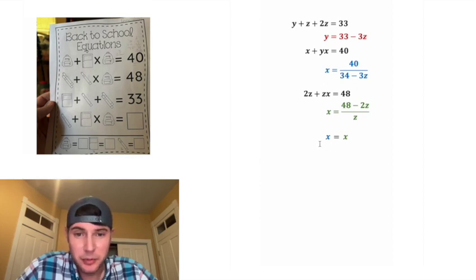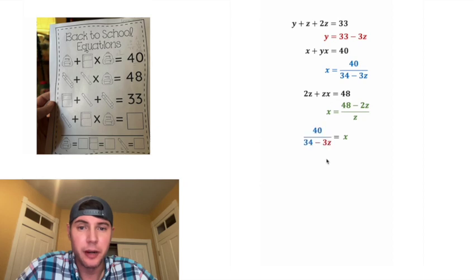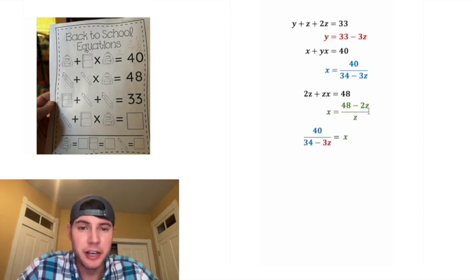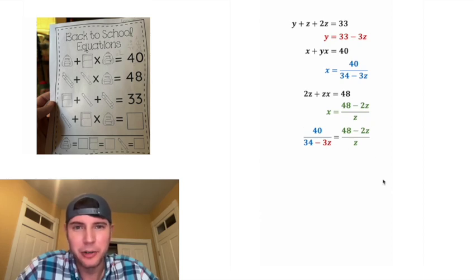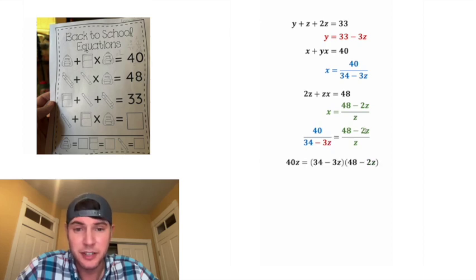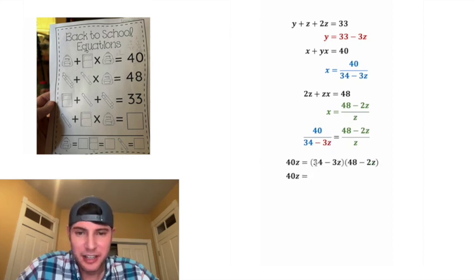We know x equals x, so we can substitute: the blue x is 40 over (34 minus 3z), and the green x is (48 minus 2z) over z. Now we have a proportion that we can solve by cross multiplying. So we have 40 times z equal to this times this.